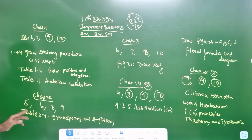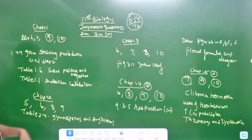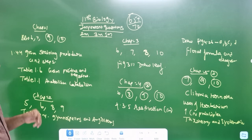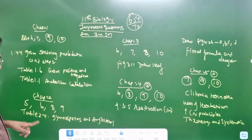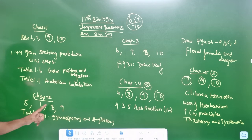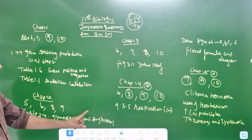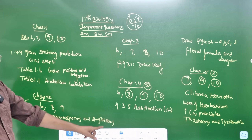Chapter 2 is sections 5, 6, 8, 9 — that is 5 marks. Table 2.5 is gymnosum and angiosum. This is 5 marks.